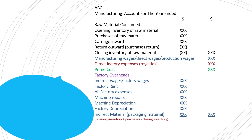Then make the total of all factory overheads. This total of factory overheads will be added to the prime cost, and the answer will be the total factory cost. After getting the total factory cost, only a few adjustments are further required to calculate the finished goods cost.